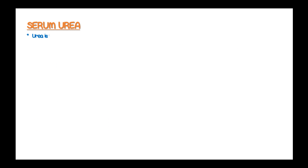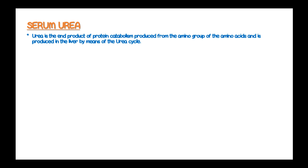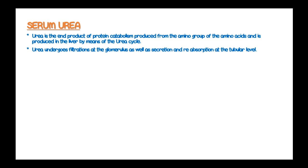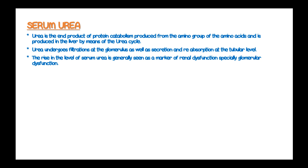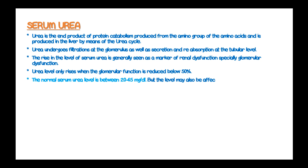Urea is an end product of protein catabolism, produced from the amino group of amino acids, and is produced by the liver via the urea cycle. Urea undergoes filtration at the glomerulus as well as secretion and reabsorption at the tubular level. The rise in serum urea is generally seen as a mark of renal dysfunction, especially glomerular dysfunction. Urea level only rises when glomerular filtration is reduced below 50%. The normal serum urea level is between 20 to 45 mg per deciliter.